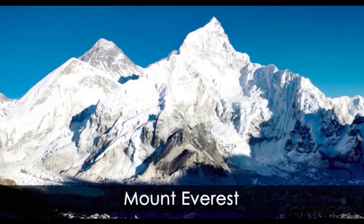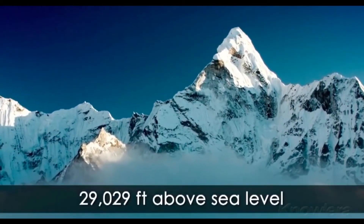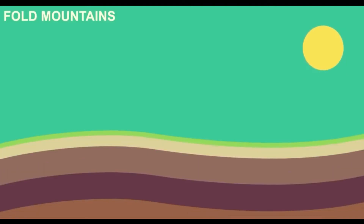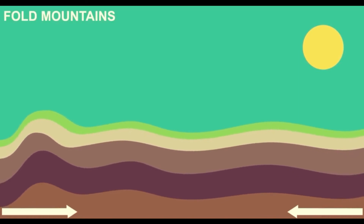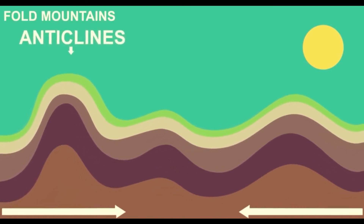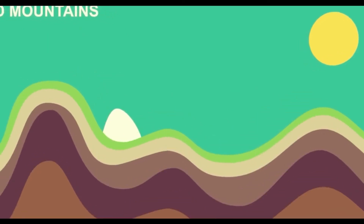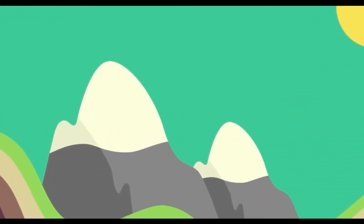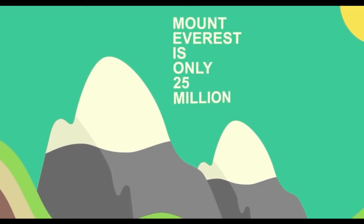The highest mountain we know of is Mount Everest, at 29,000 feet above sea level. It is formed due to the folding process, where compression forces push the plates together, squeezing them and forming what we call anticlines and synclines in a bow shape, forming a fold mountain. Mount Everest was formed over 25 million years ago.